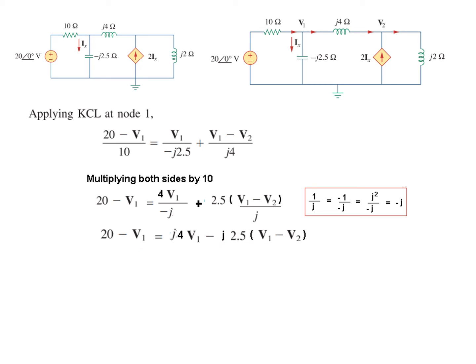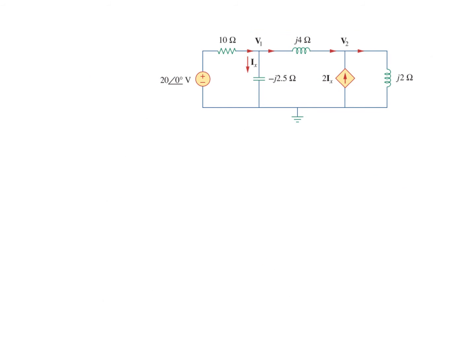Now we can take the like terms together, collecting the same terms. This is our final equation, equation number 1—v1 terms, v2 terms, and the constant. Now we move to node number two.